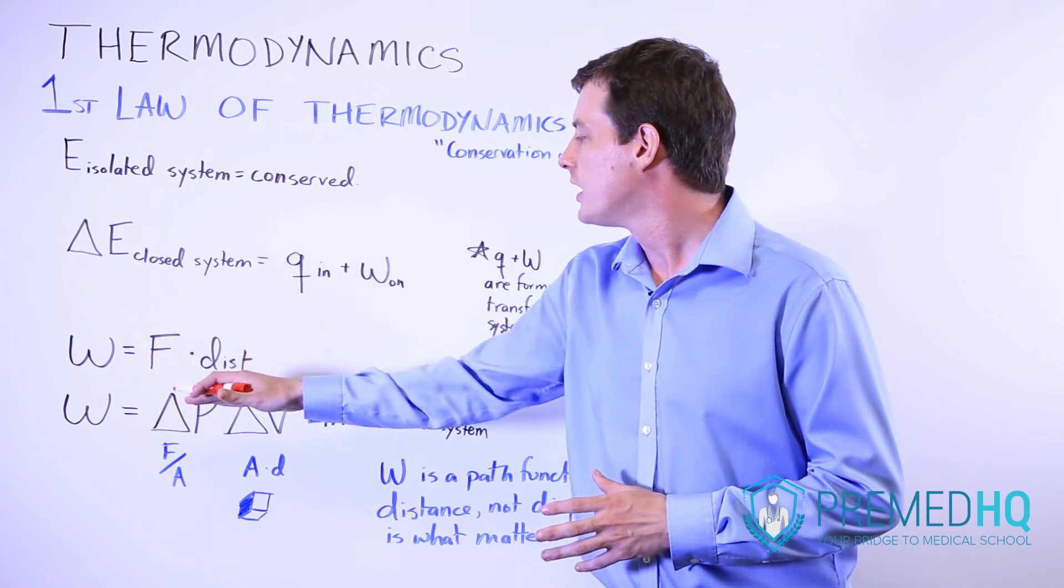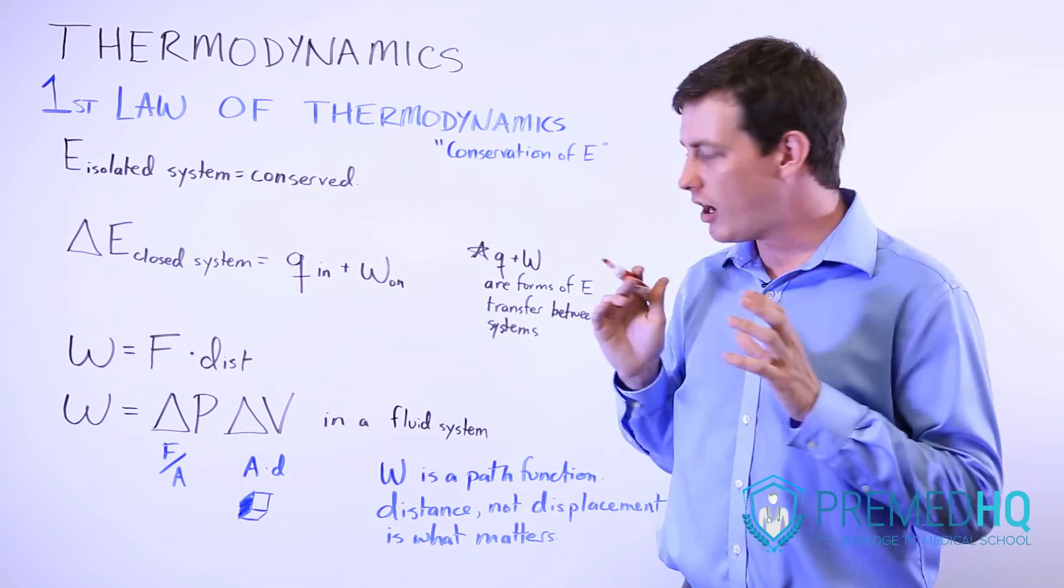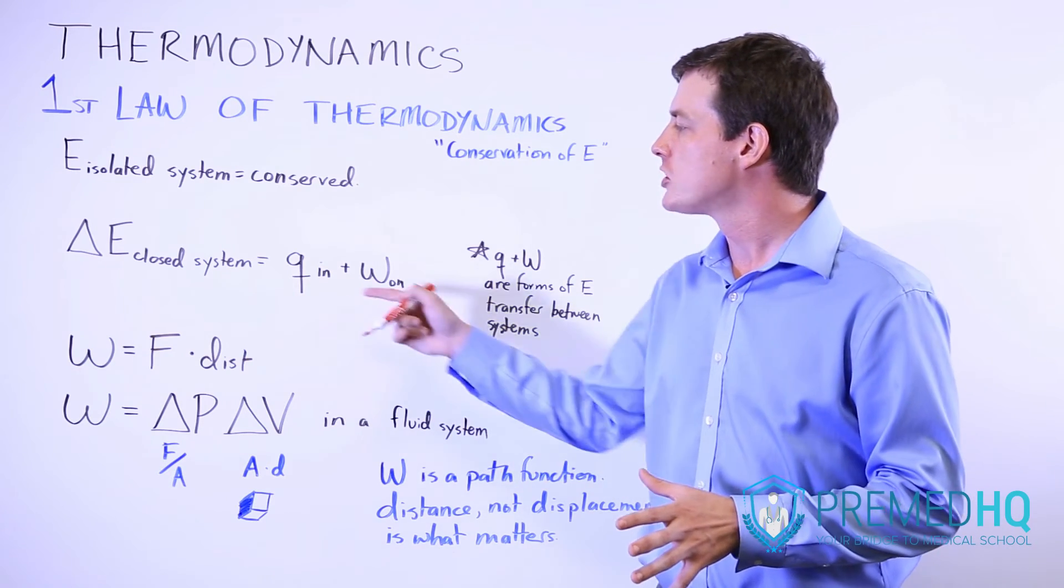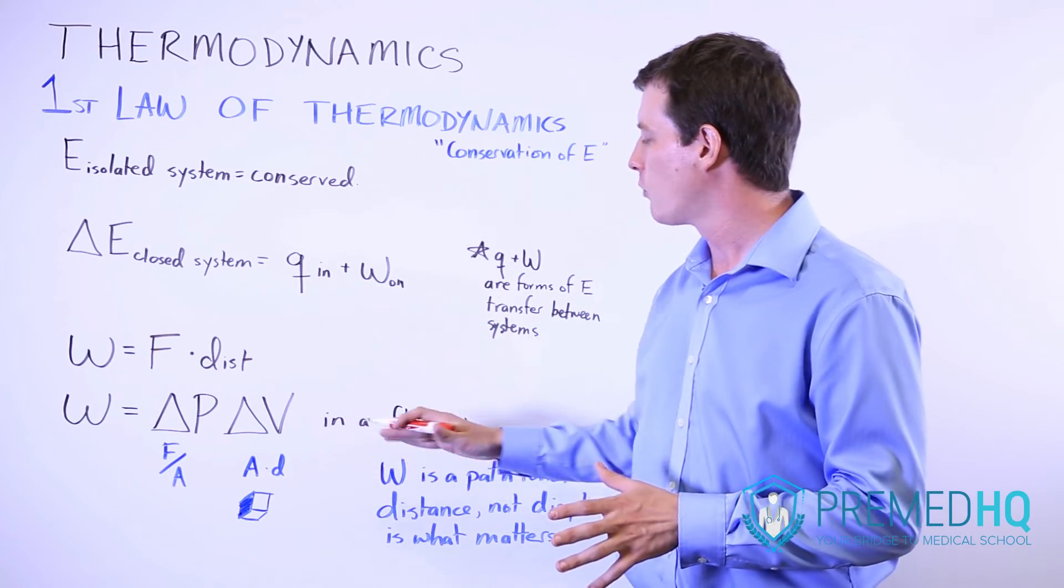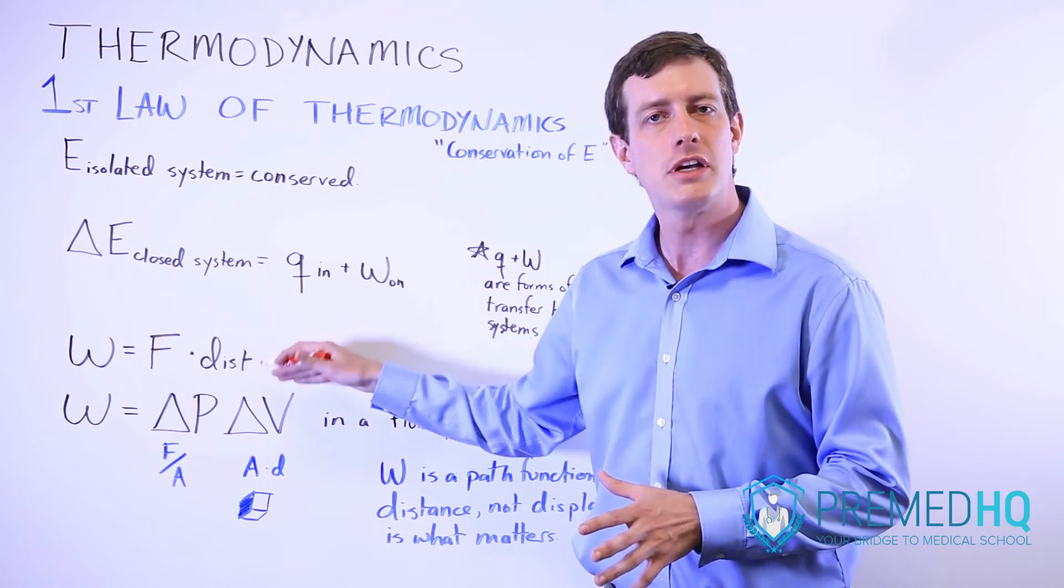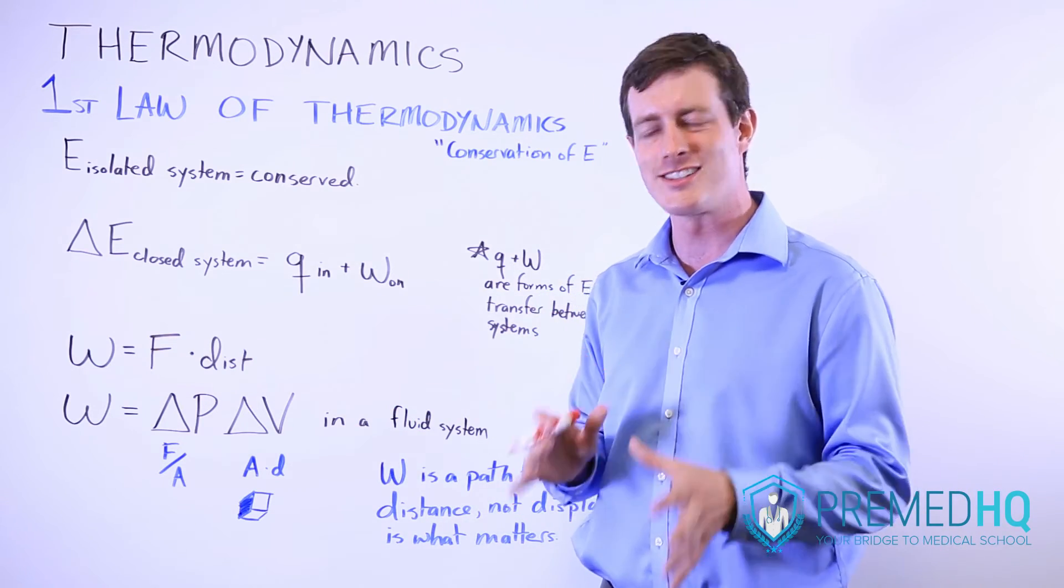And so FD work and PV work are of the same type of quantity. They're both measured in joules and they're just different ways of expressing it depending on whether you have a three-dimensional fluid system or whether you have a two-dimensional system over which the work is occurring.